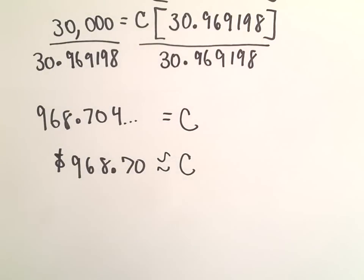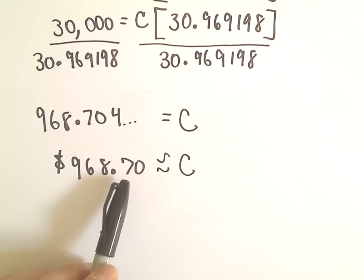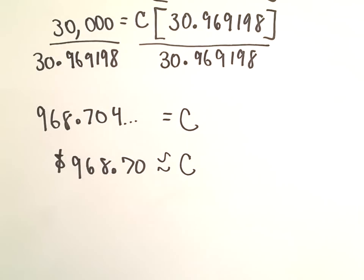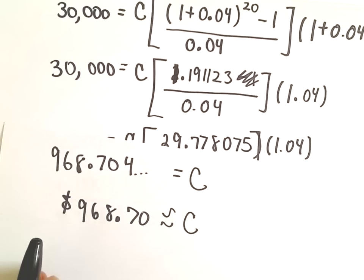So if you go to the bank at the beginning of the year, have an annuity due, you get 4% interest rate. If you deposit 968.70, over the course of 20 years, it says in fact you're going to end up with $30,000.